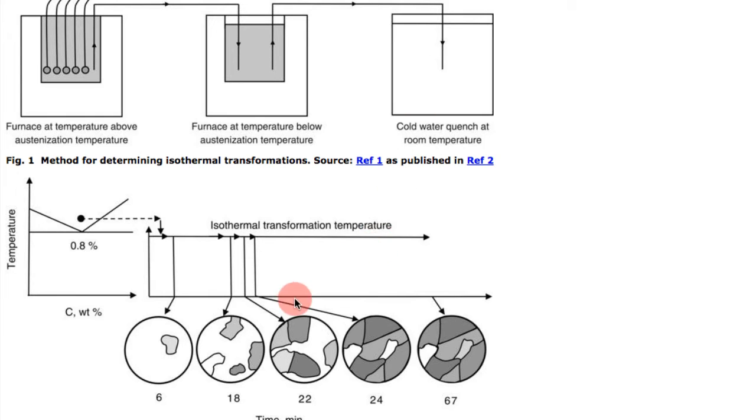When you arrest that in cold water quench at different times, you then look at the microstructure that has developed. When you do a microstructure analysis, you can see that maybe after six minutes you have just a small amount of what you're expecting. After 18, you have more. After 22, you have more. Basically, you're looking at the microstructure of these quenched disks to see how much time it takes to complete the transformation along this isothermal line.